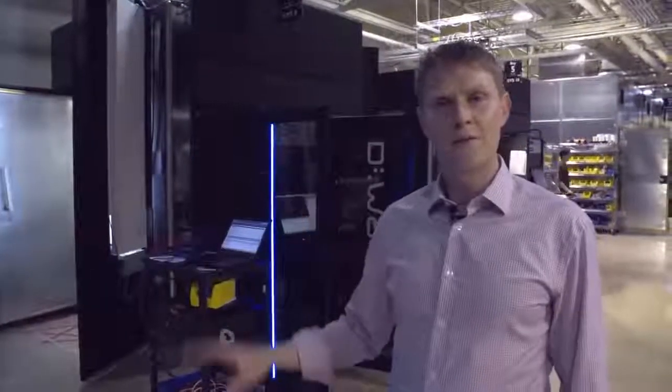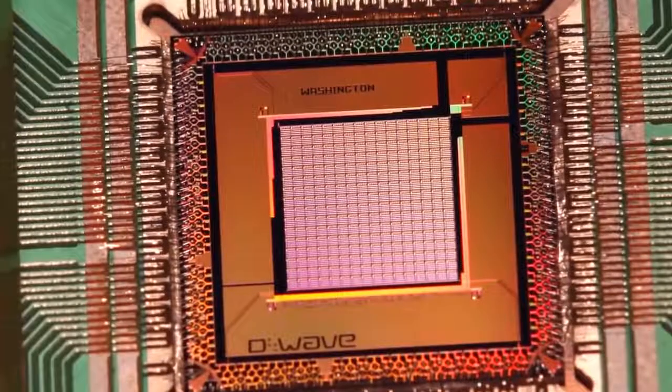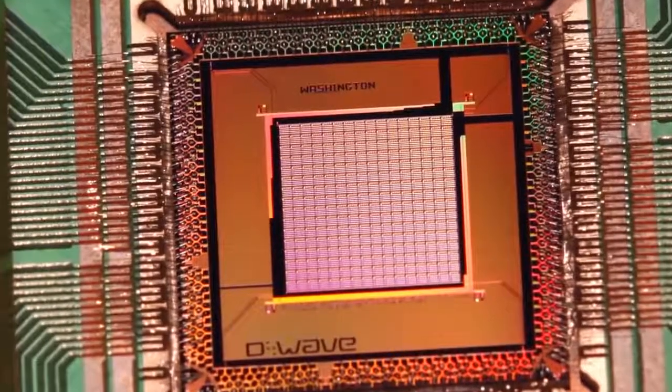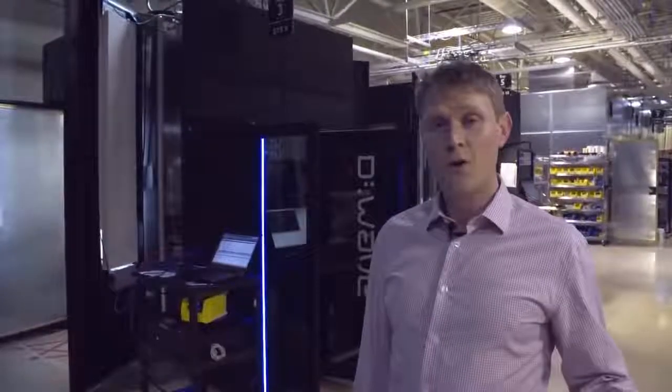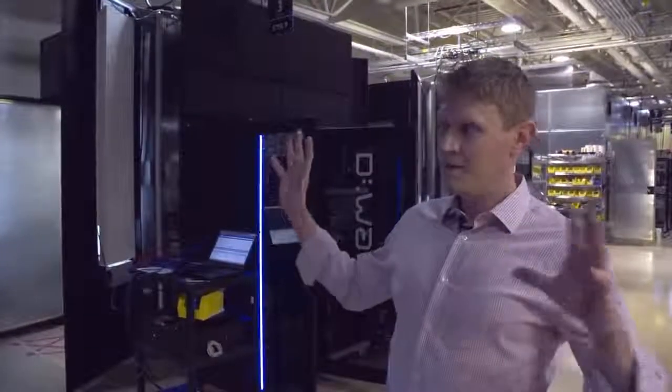Each of these black systems is a quantum computer. Inside that system is a thumbnail-sized quantum processor. In order to operate and develop quantum processors, we require a fairly extreme operating environment, which includes ultra-low temperatures and an ultra-low magnetic environment. And to achieve those, we need a fairly large and sophisticated system.